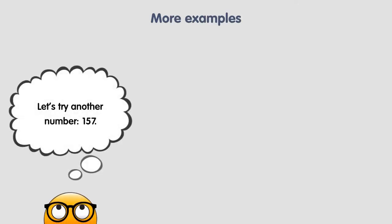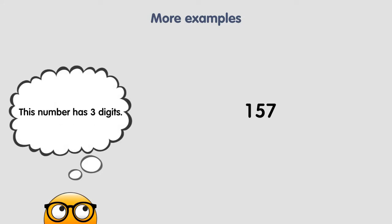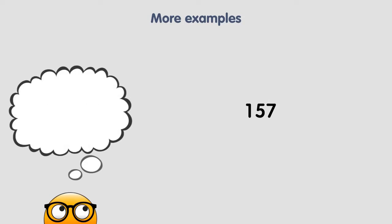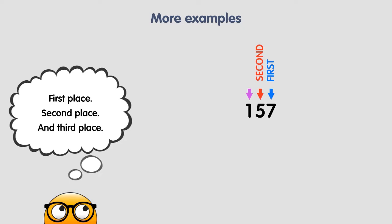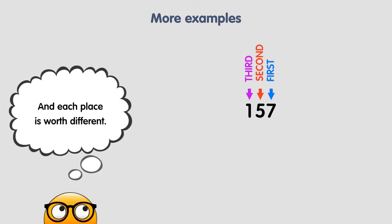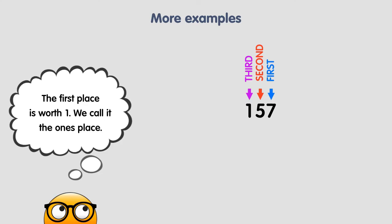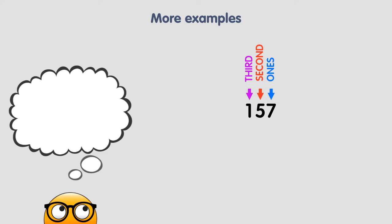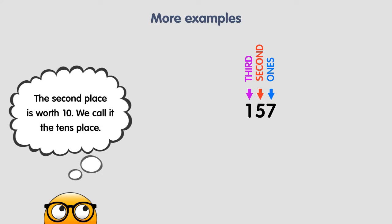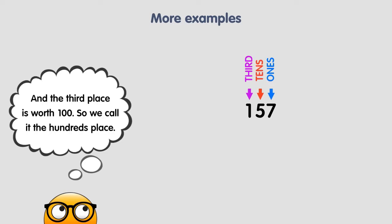Let's try another number: 157. This number has 3 digits. Each digit in this number has a different place or position — first place, second place, and third place. Each place is worth something different. The first place is worth 1, we call it the 1's place. The second place is worth 10, we call it the 10's place. And the third place is worth 100, so we call it the 100's place.